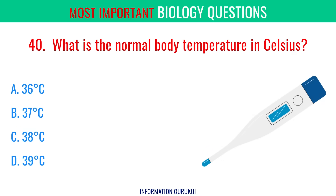What is the normal body temperature in Celsius? 37 degrees Celsius.